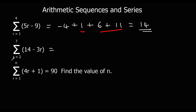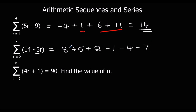For the second practice question, starting with r equals two and ending at seven. Fourteen take away three twos: fourteen take away six is eight. Then we go down in threes — checking: fourteen take away three threes is fourteen take away nine, which is five. So the terms going from r equals two to seven are: eight, five, two, negative one, negative four, negative seven. Adding those up: eight plus five is thirteen, plus two is fifteen, minus one is fourteen, minus four is ten, minus seven gives three.